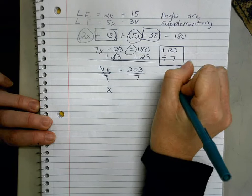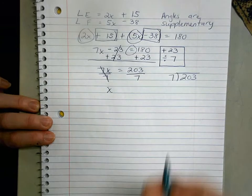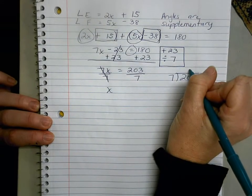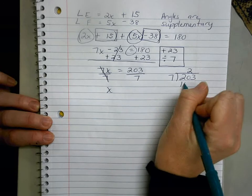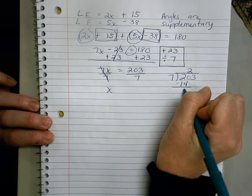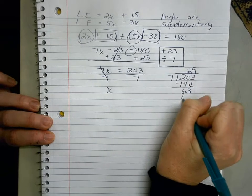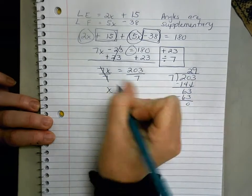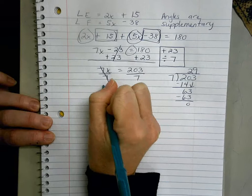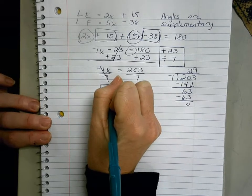And when you go ahead and divide, some of you are trying to do a lot in your head, which is great, but if you're having trouble feel free to actually do the work. We're gonna get 14 remainder 6, and then 7 goes into 63 nine times, so x equals 29. Some students will stop here, but the directions did ask you to find the two angles.